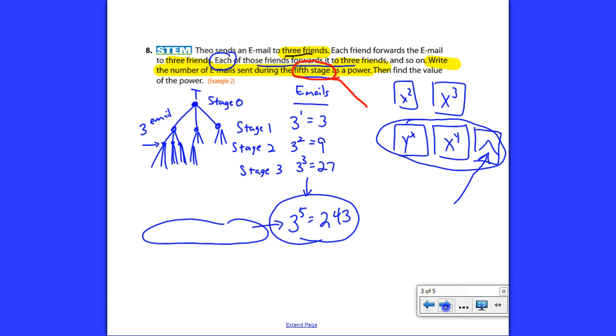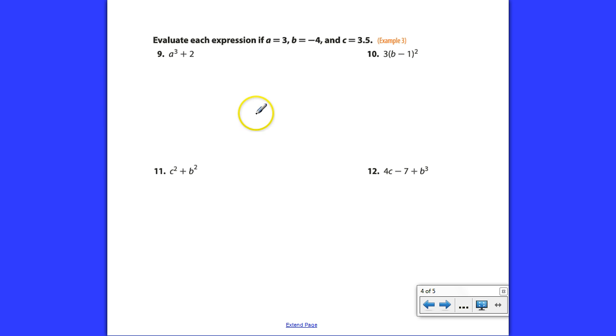Now our calculators are going to be extremely helpful for us, particularly as we move down the page into problems like this. Number nine says it's asking us to evaluate. That means find the value. If A is three, B is negative four, and C is 3.5. So what we do is, in number nine, we're going to substitute three in for A.